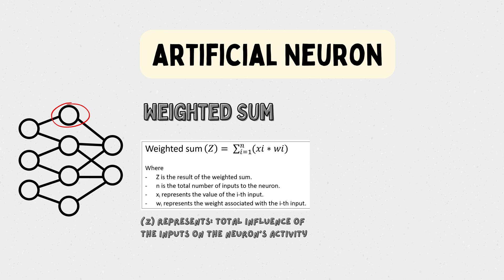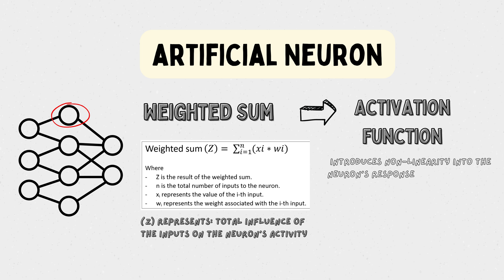After calculating the weighted sum Z, the result is passed through an activation function. The activation function introduces non-linearity into the neuron's response. The purpose of the activation function is to determine whether and to what extent the neuron should be activated or fired. There are several common activation functions used in neural networks.